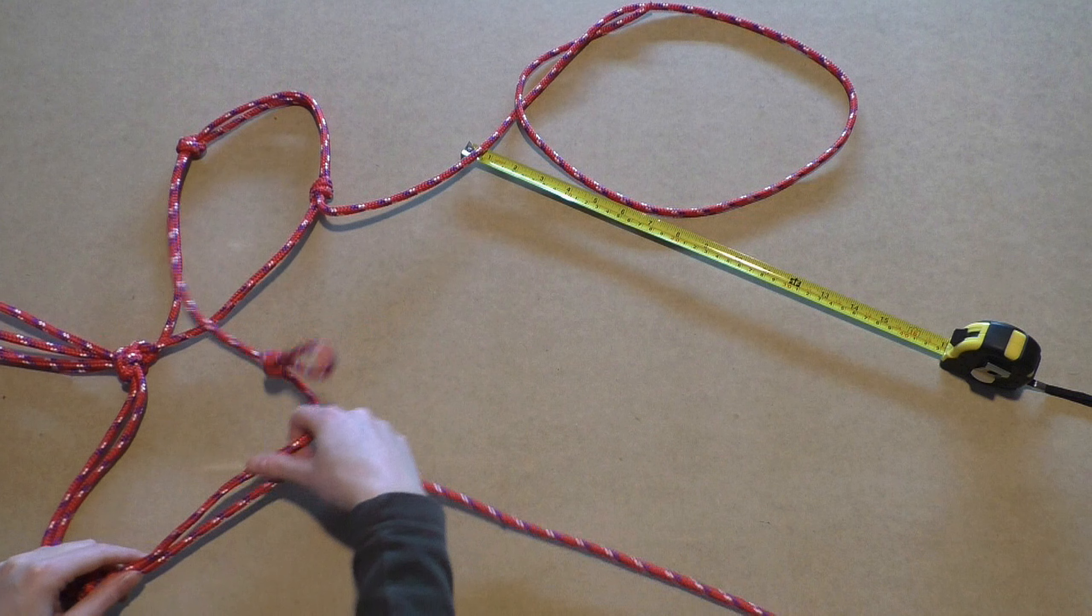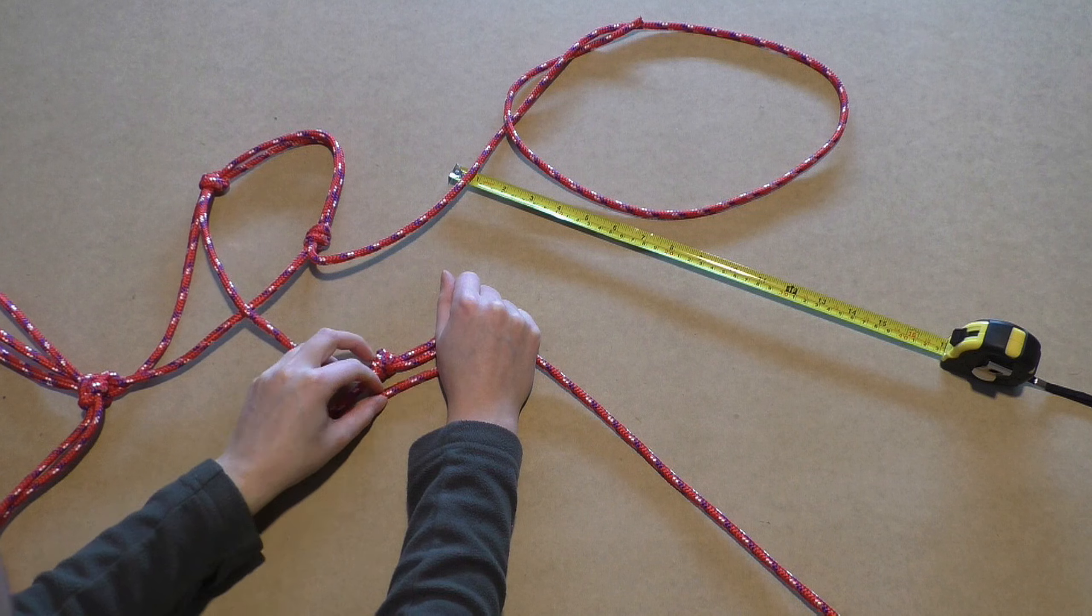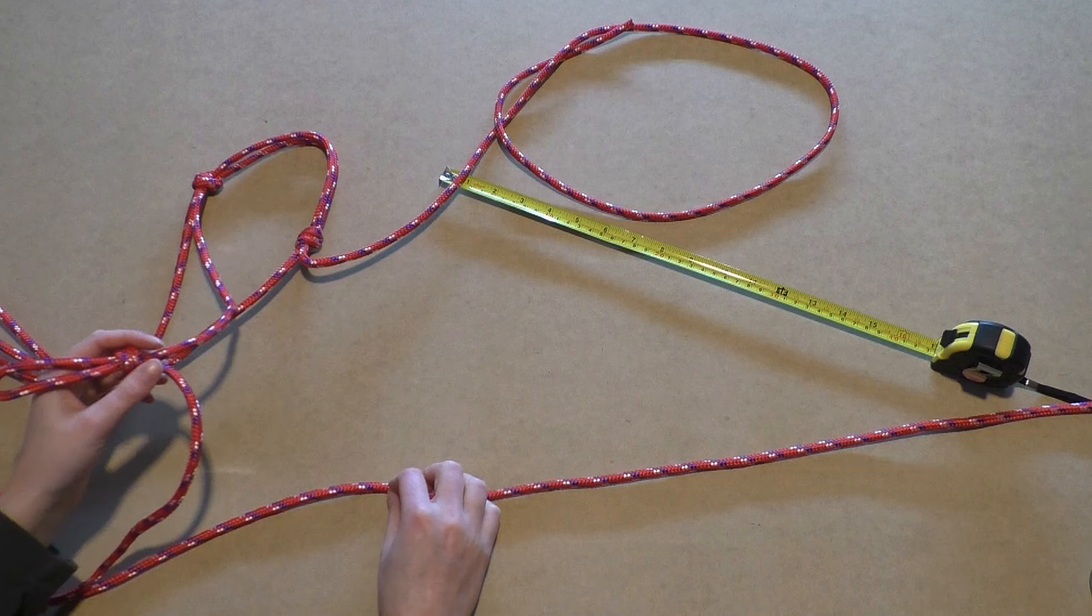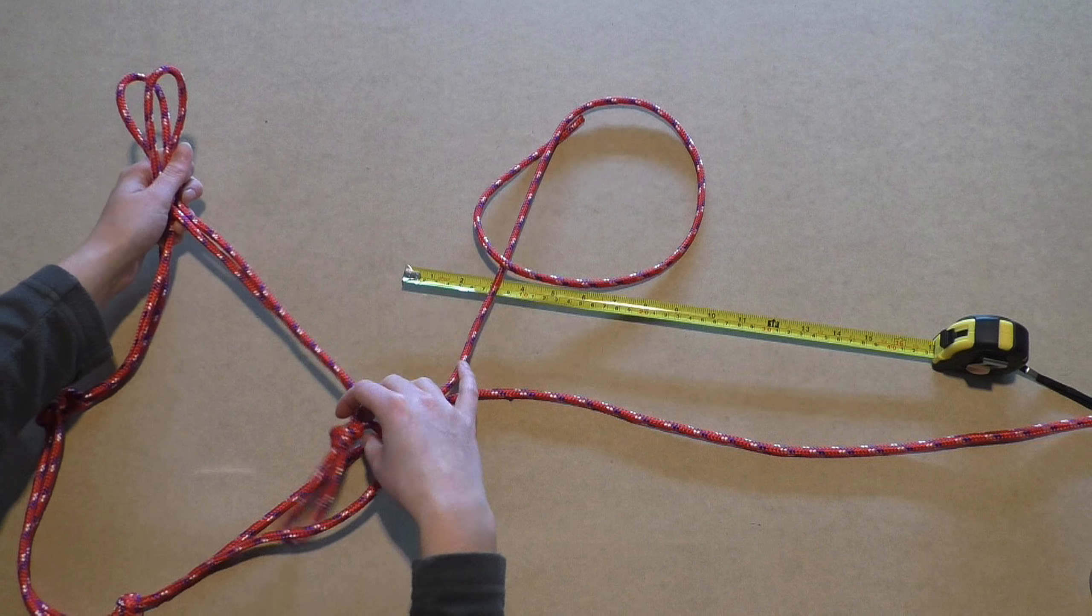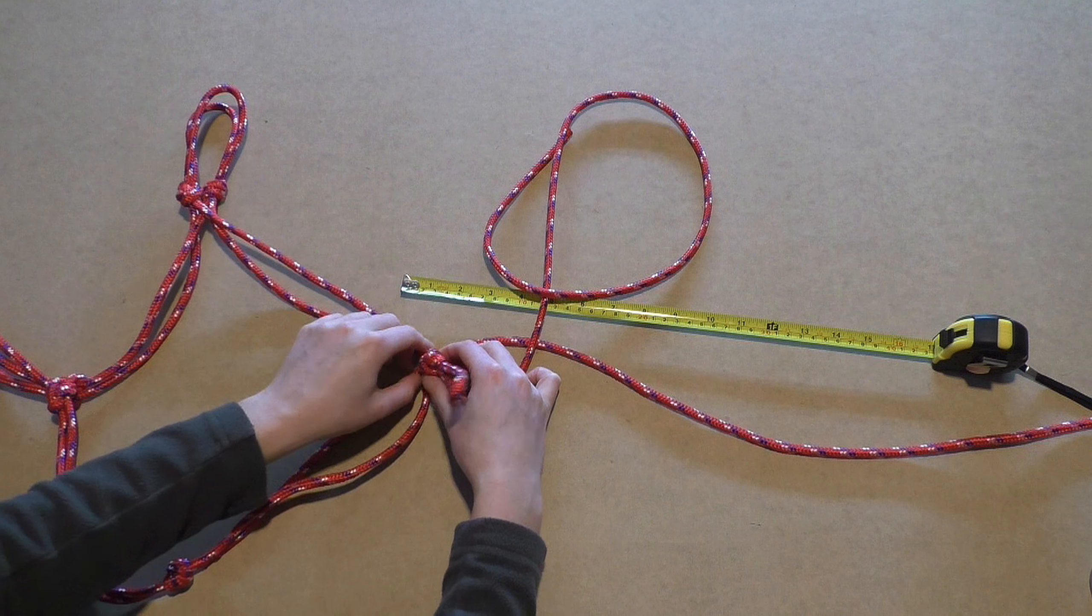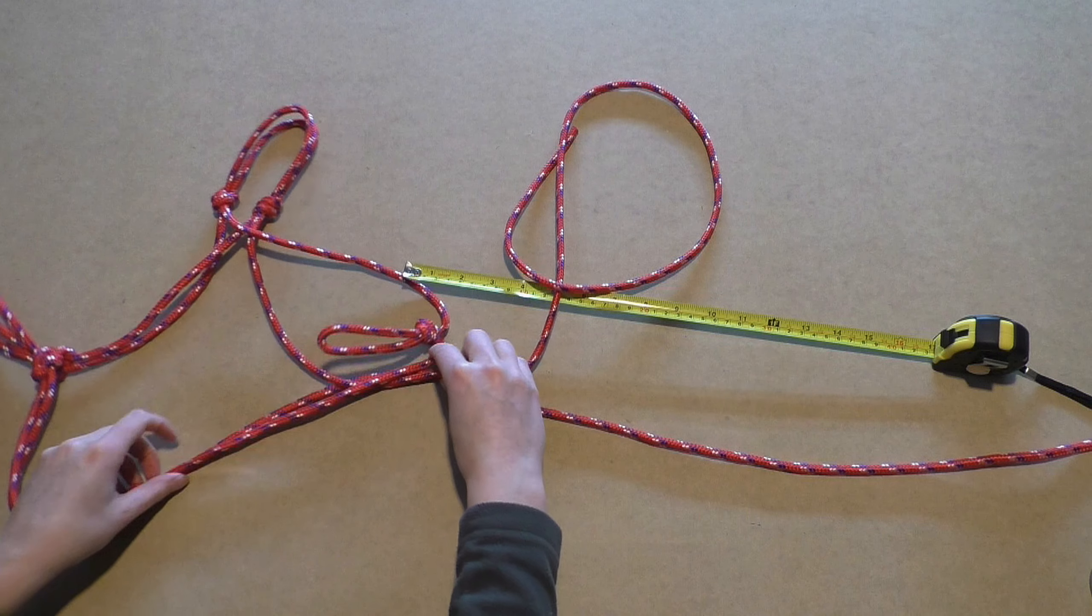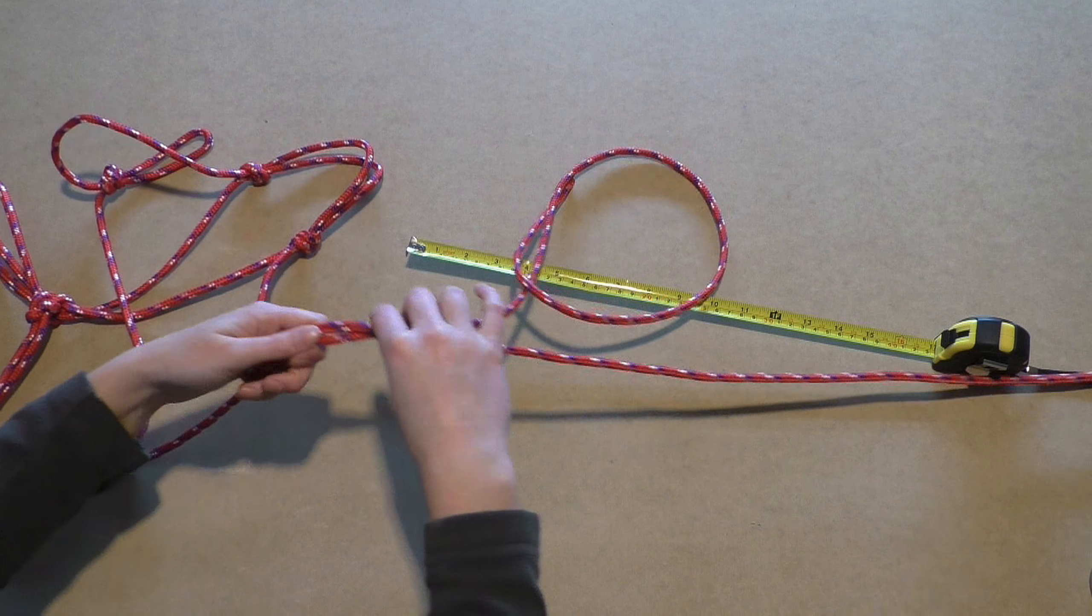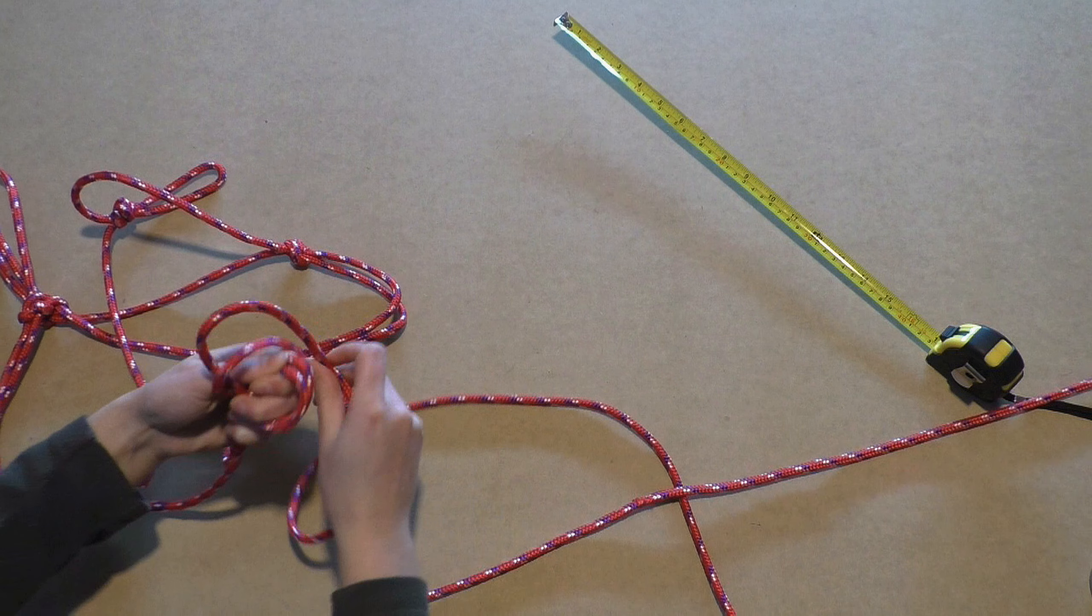Take the short end of the rope and measure the distance until the overhand loop. Then take the long end and make sure you make this as long as the distance between the overhand loop and the noseband. Grab the short and the long ends together at the measured distances and tie an overhand knot.